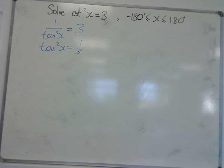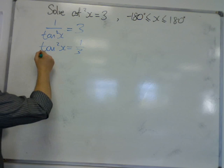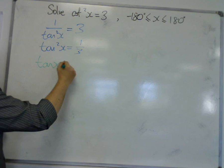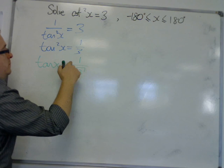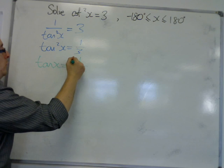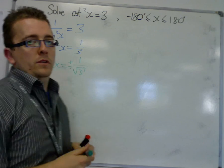So we're now solving this equation. Now what we can do is we can square root both sides, and we get tan x is equal to 1 over root 3. But remember, it's the plus or minus of 1 over root 3.